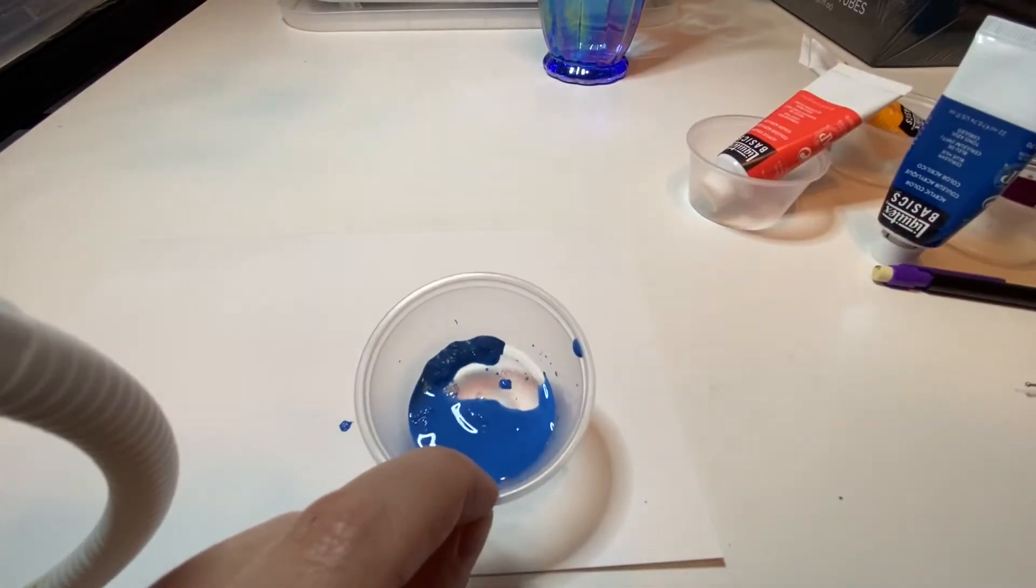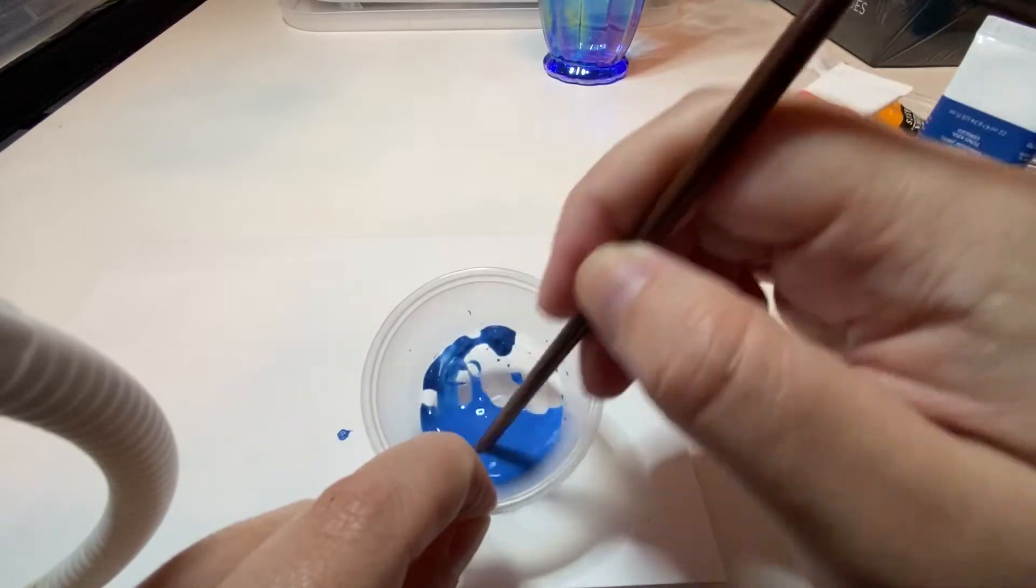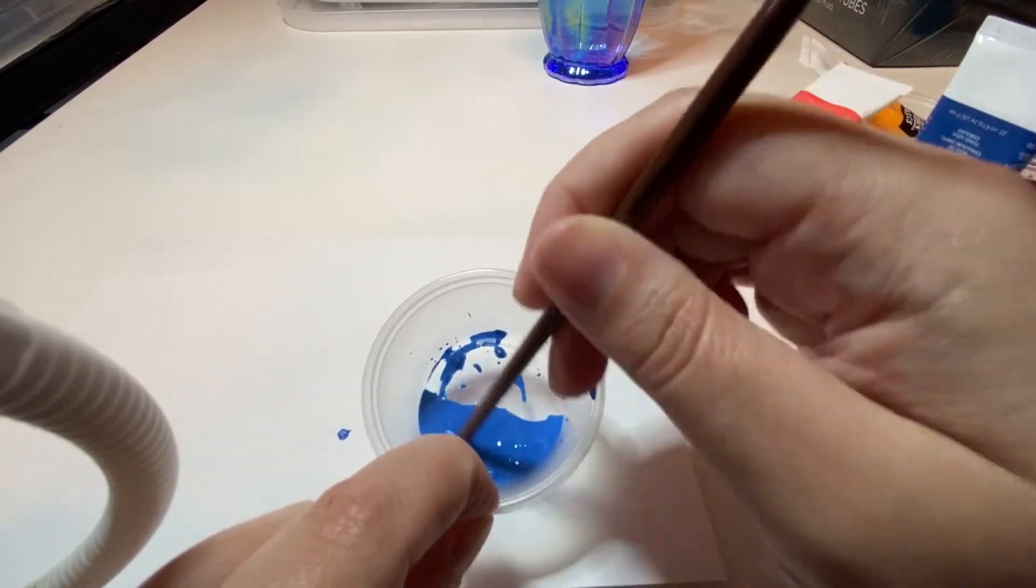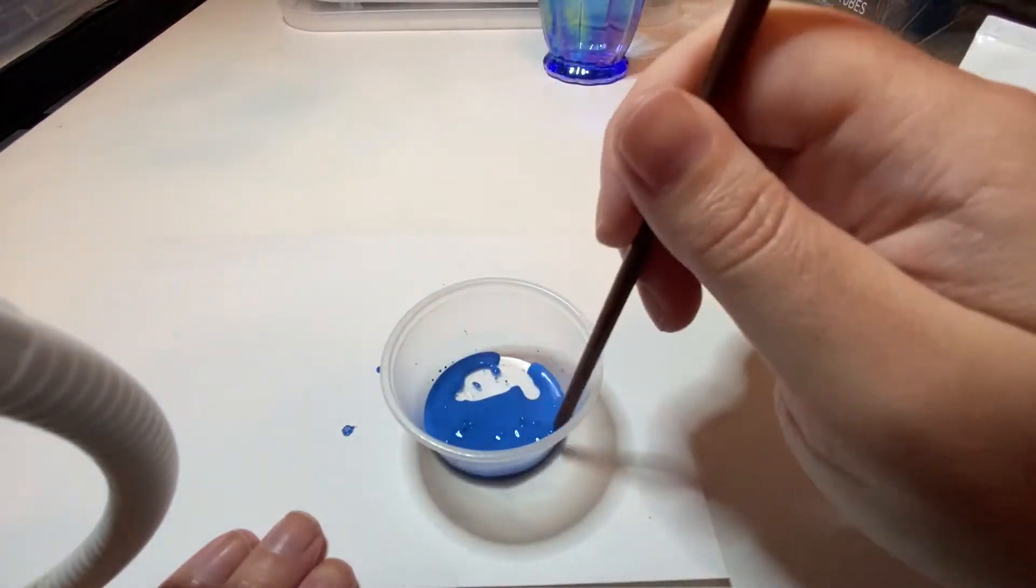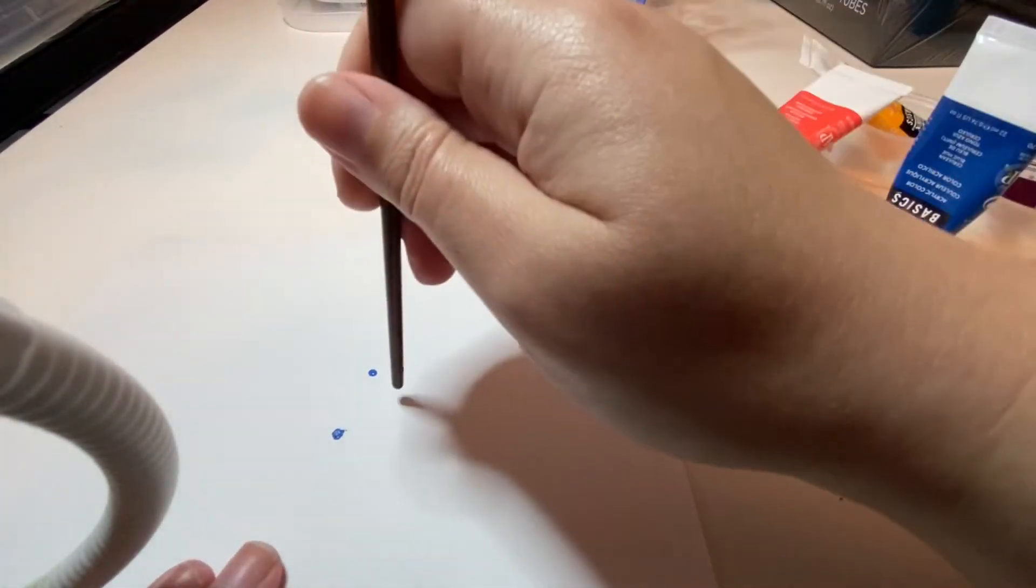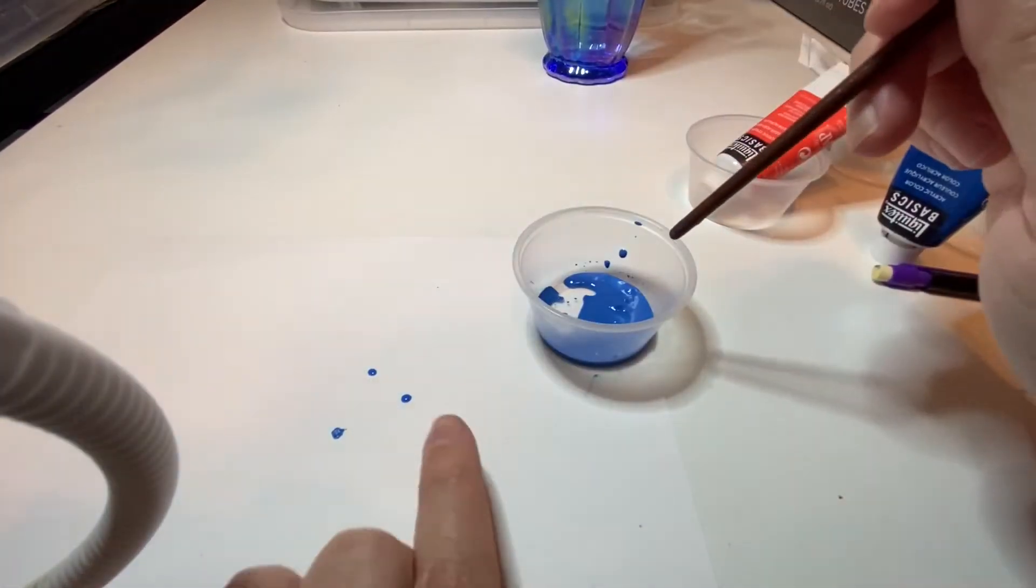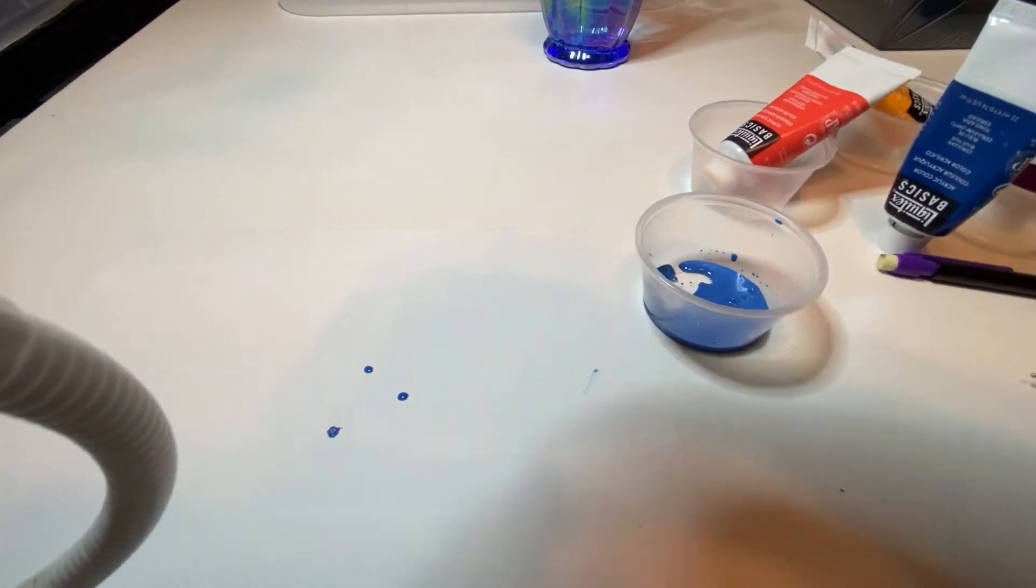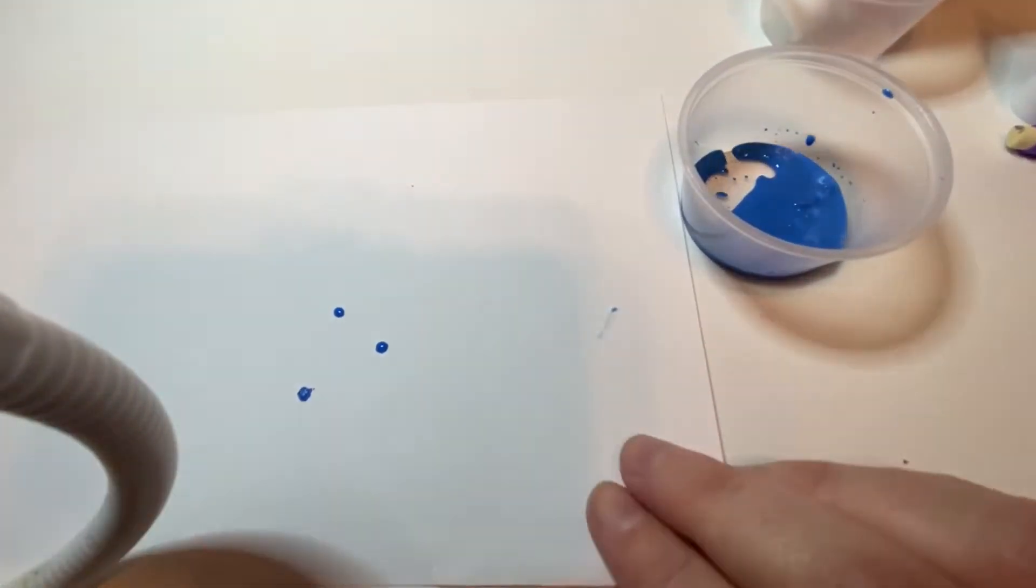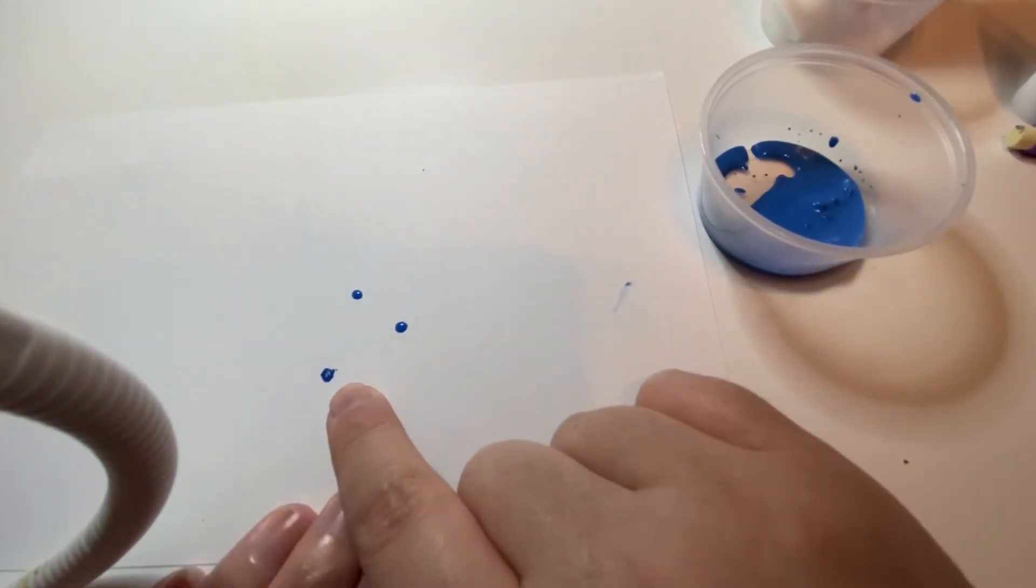This is heavy body acrylic and this is what I would recommend for doing most fine art pieces. You can use different mediums to thin it out or you can use it thick. It's just a little bit more pigmented. So it has more color per square inch than the craft paint, which is why it's a little bit better in my opinion.